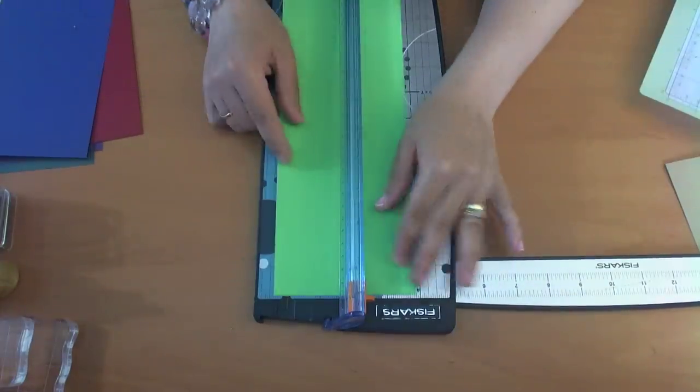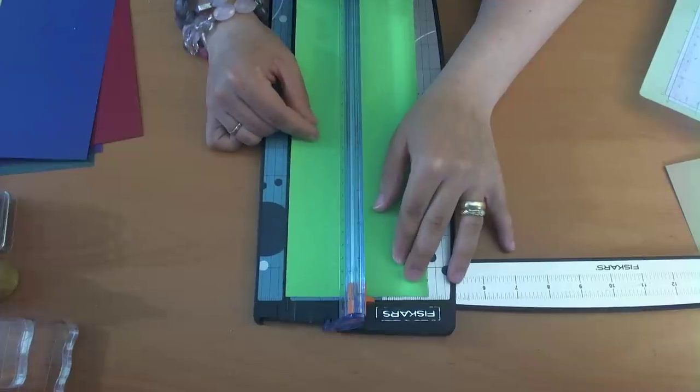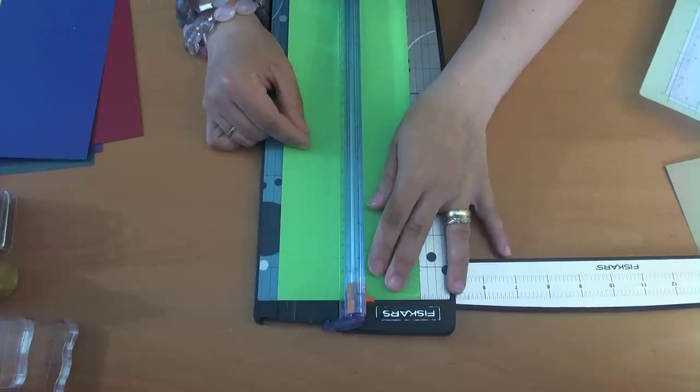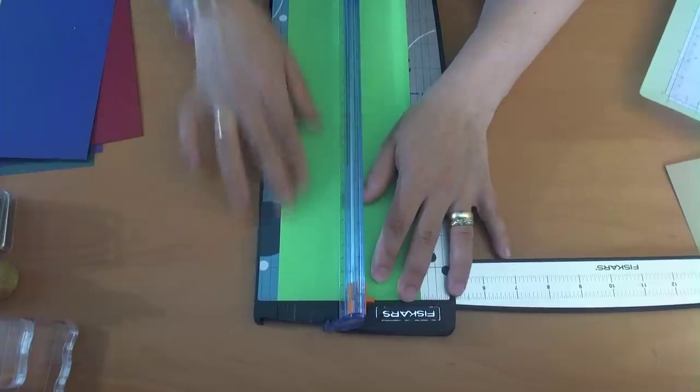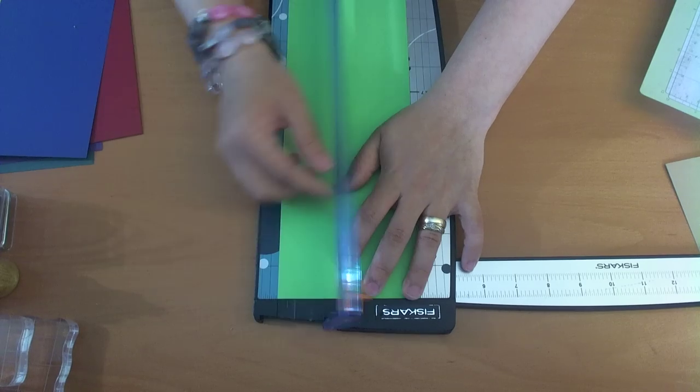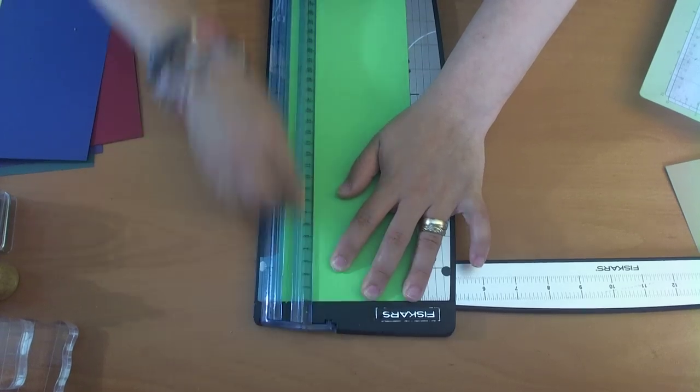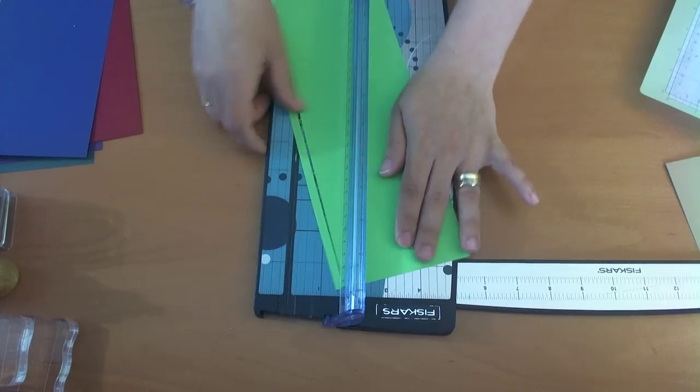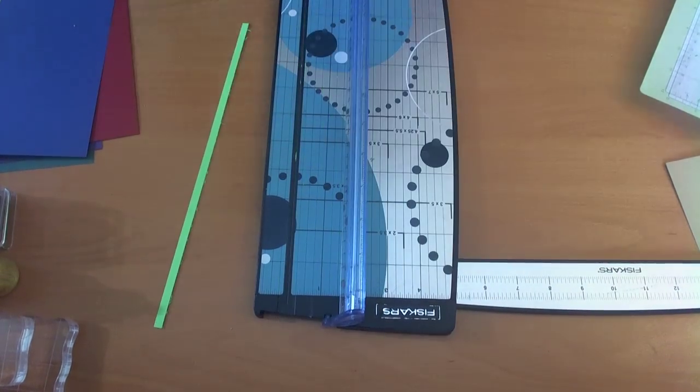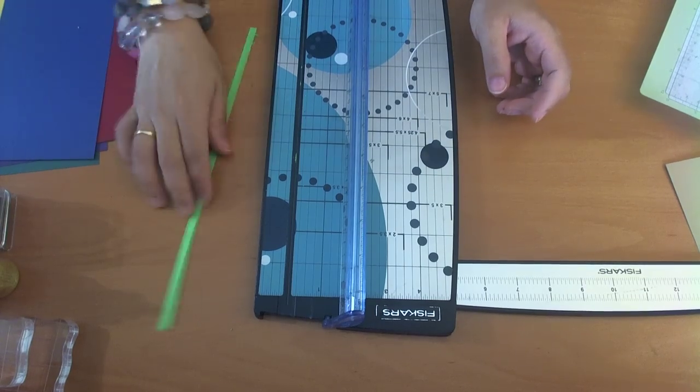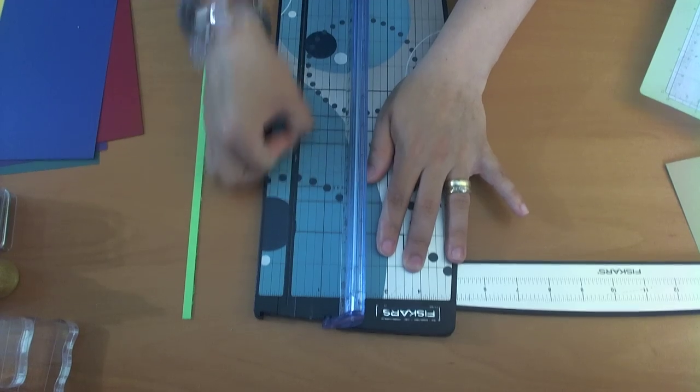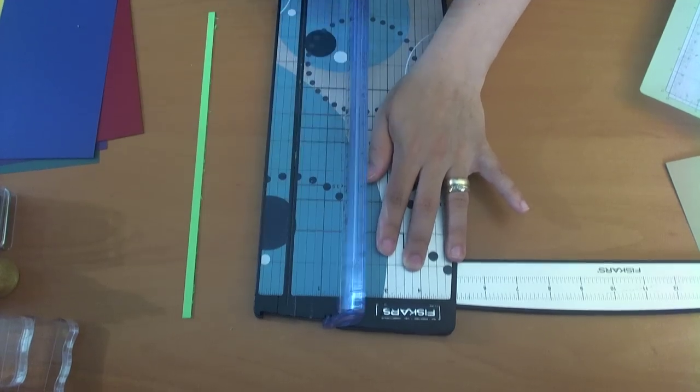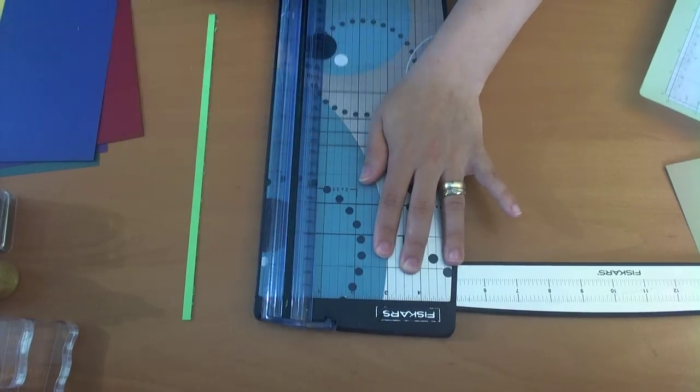So what I'm going to do now is cut these, and these are four and a quarter. I'm going to cut these just a quarter of an inch on all of them so I can have some strips to play along with later.